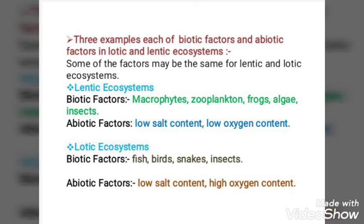Now, three examples each of biotic and abiotic factors in lotic and lentic ecosystems — some factors may be the same for both. Lentic ecosystems biotic factors include microphytes, zooplankton, frogs, algae, and insects; abiotic factors include low salt content and low oxygen content. Lotic ecosystems biotic factors include fish, birds, snakes, and insects; abiotic factors include low salt content and high oxygen content.